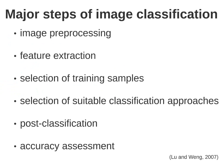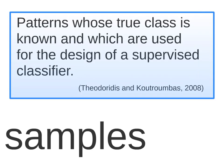Considering classifiers as a task of image classification or pattern recognition in general, as defined by Lu and Wang in 2007, we have these steps to make image classification: pre-process the image, make feature extraction, select training samples, select a suitable classification approach, apply classification, and perform accuracy assessment. The focus of this work is on samples, which, according to Theodorides and Kutrumas in 2008, are patterns whose class is known and which are used for the design of a supervised classifier. The aim of this work is how to select samples.